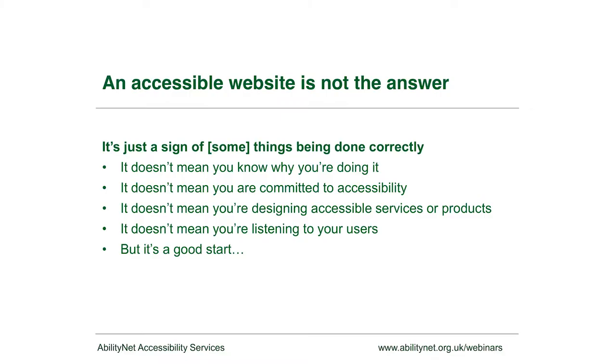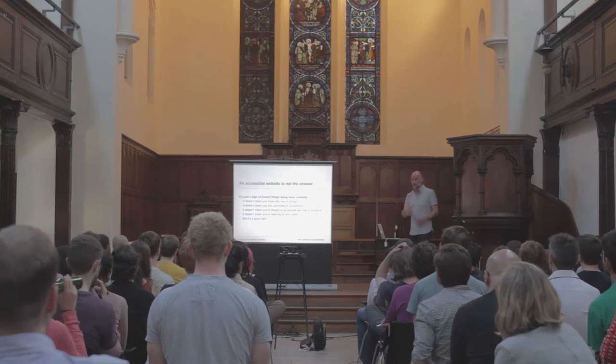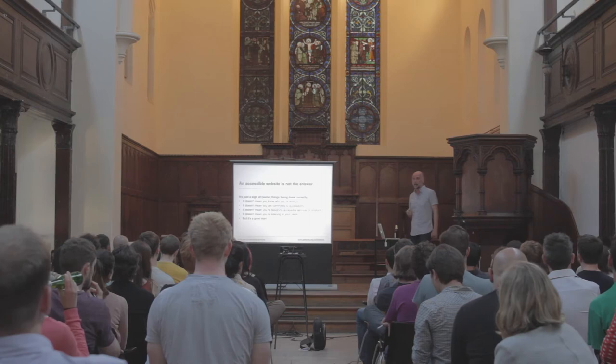First, an accessible website is not the answer. This is not just about building accessible websites - that's just a sign you might have done something right, possibly accidentally. Quite a lot of accessibility comes out of the box, and then you undo it as you do your design work. That's particularly true of apps and iPhones, where iOS has a lot of accessibility built in that developers often turn off because they're not sure what it's for. We're talking about listening to your users, putting accessibility at the centre of your design decisions - and this will be good for your business.